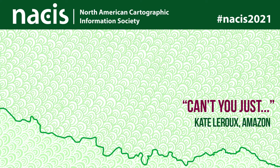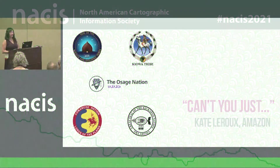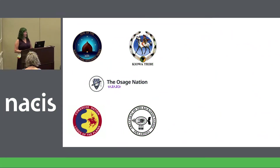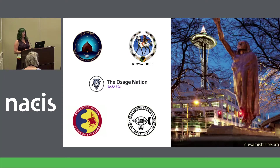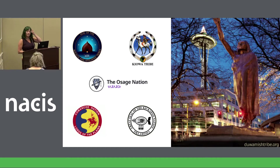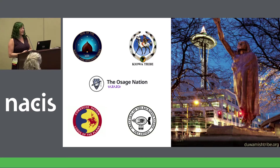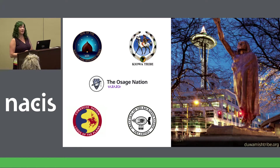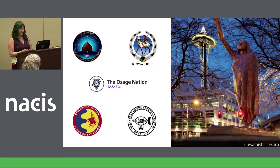Before I start, I'd like to acknowledge that I'm giving this talk on territory long inhabited by indigenous tribes, including the Wichita, Kiowa, Osage, Comanche, and Kickapoo. At home, I live on the traditional land of the Duwamish people in a city named after their venerable leader, Chief Seattle, and I support the Duwamish tribe's ongoing struggle for US federal recognition. Thank you for honoring these indigenous tribes with me today.